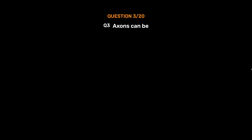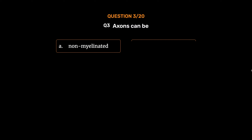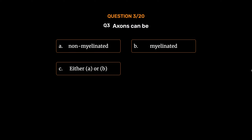Question number 3. Axons can be: Option A: Non-myelinated. Option B: Myelinated. Option C: Either A or B. Option D: None of these. The correct answer is Option C: Either A or B.